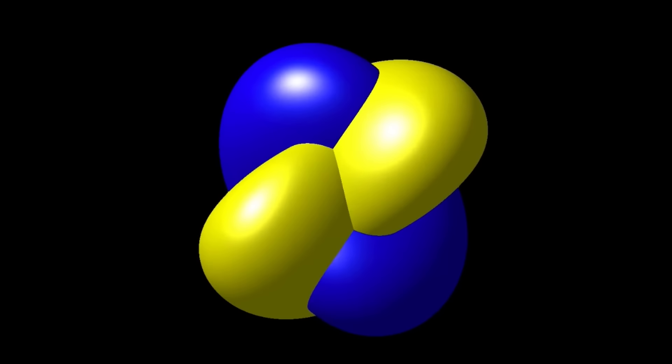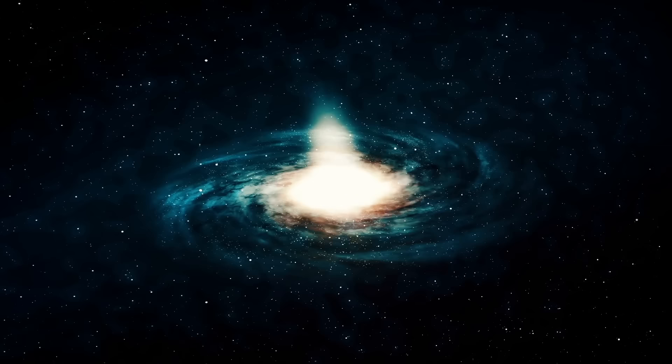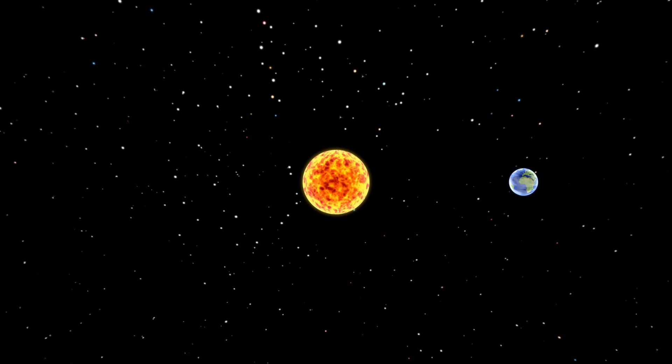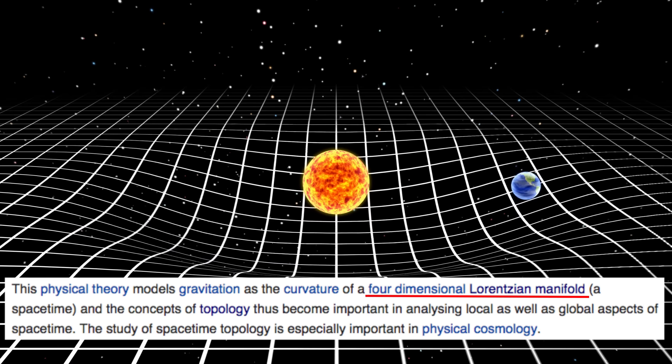Or it reveals mathematically how you can turn a sphere inside out without cutting or tearing it or making any creases while, yes, allowing self-intersections. Is this it? Is this a sphere turning inside out? Topology applies to fields of physics such as quantum field theory or cosmology. In general, relativity states that space-time is a four-dimensional Lorentzian manifold and analyzing this involves concepts within topology.